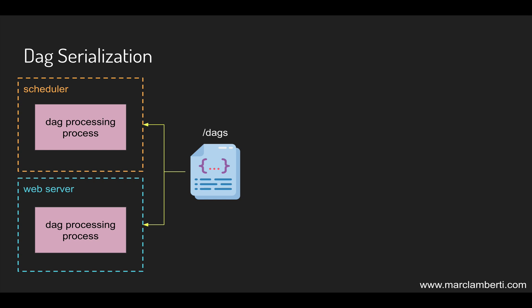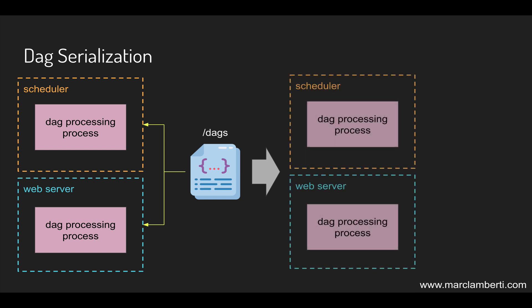Next, a feature that is already implemented since version 1.10.10 is DAG serialization. DAG serialization is the process of storing your DAGs directly in the database instead of having them as files in the DAGs folder. Right now both your web server and scheduler are parsing the DAGs folder to process the DAGs in it. This is the default behavior, but you can change it by turning on the parameter 'store_serialized_dags' in your configuration.